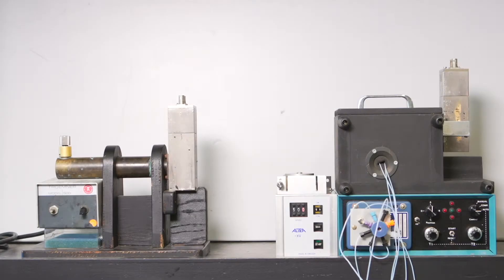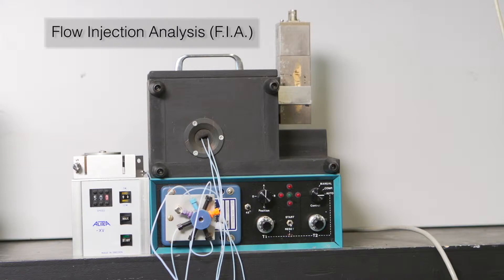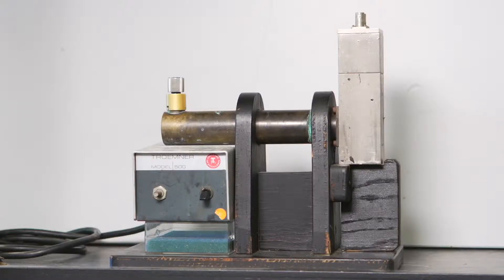This experiment uses two different methods and instrumental setups. This one is the manual injection and this one is the flow injection analysis or FIA. Let's take a look at the manual injection setup first.